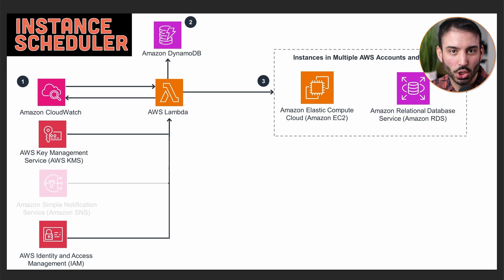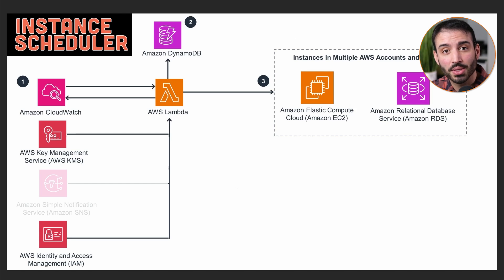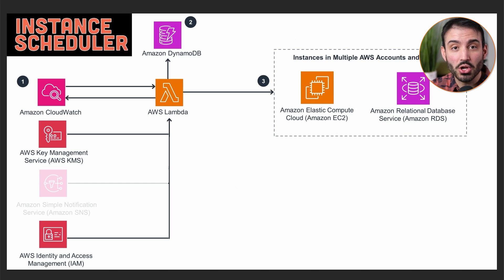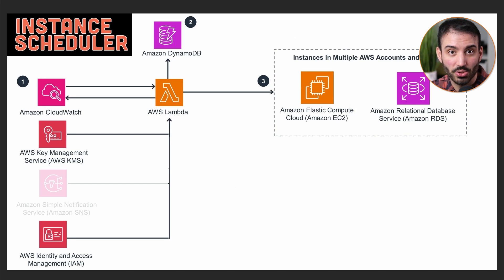Hello everyone, this is another real-life AWS architecture overview video. This time we're going to be talking about an instance scheduler architecture. This is a very common problem — when you're in the office, you only want certain pieces of infrastructure, especially provisioned infrastructure that costs money by the hour, to be up and running at specific times, like a traditional 9 a.m. to 5 p.m. workday. This architecture turns EC2 and RDS instances on at 9 a.m. and off at 5 p.m., and it supports multiple AWS accounts, regions, and customizable schedules.